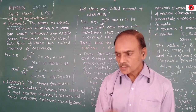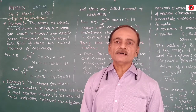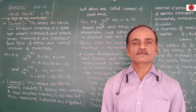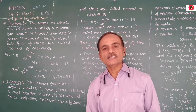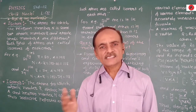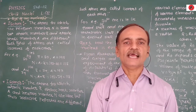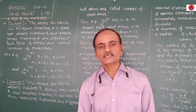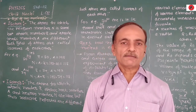We already discussed isotopes — atoms which have the same atomic number Z but different atomic mass number A. Such atoms are known as isotopes of each other. Next is the isobar: atoms having the same atomic mass number A but different atomic number Z and neutron number N. These atoms are known as isobars of each other.